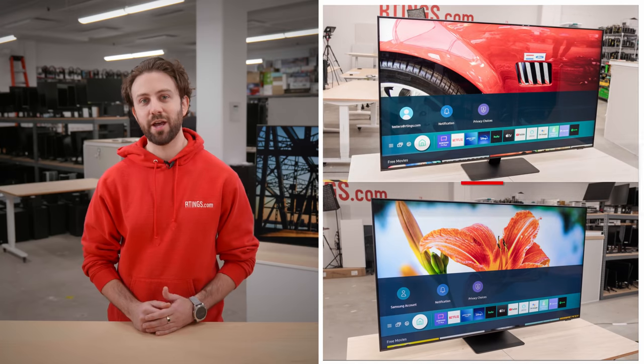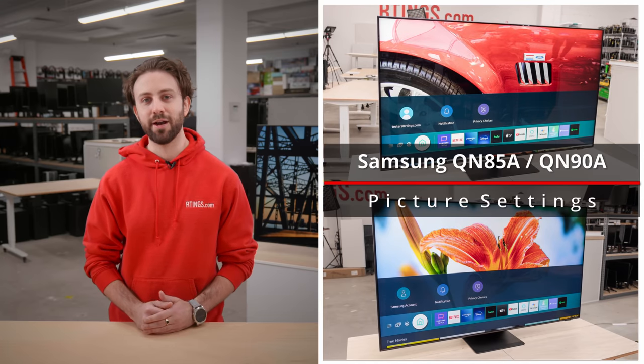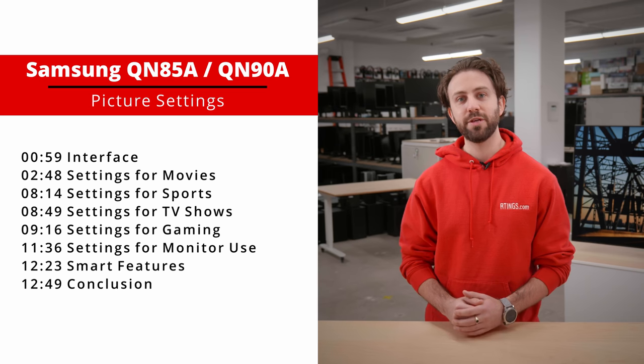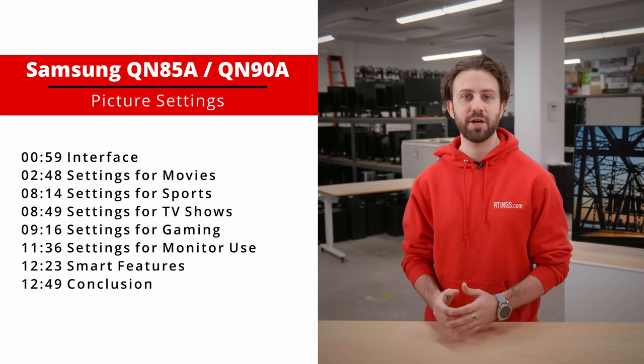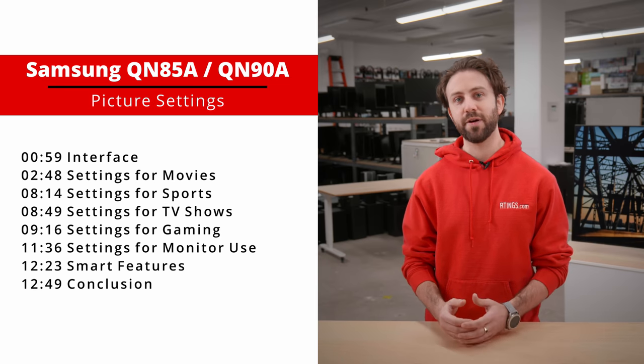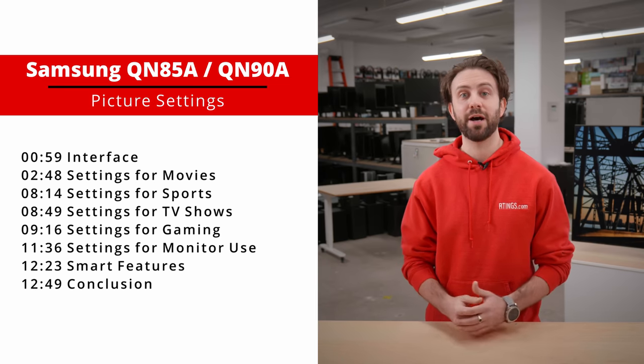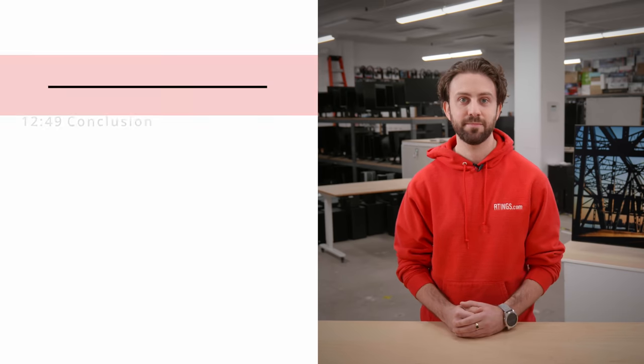We finally started receiving and testing the new 2021 TV models, and among those were the QN85A and the QN90A from Samsung's Neo QLED lineup. If you're looking to get the most out of your TV but might feel intimidated by the in-depth picture settings of your new QN85A or QN90A, then have no fear. Today we'll be focusing on the picture settings for both these models, as they share the same interface and the same Tizen operating system. We'll explain the different features found deeper in the TV's menu, and ultimately help you narrow down the settings for your ideal viewing and gaming experience. It's your TV, so feel free to tweak things to your own liking. We're simply here to give you our suggestions based on our findings using specialized equipment and intensive testing. Let's help you become masters at customizing your TV.